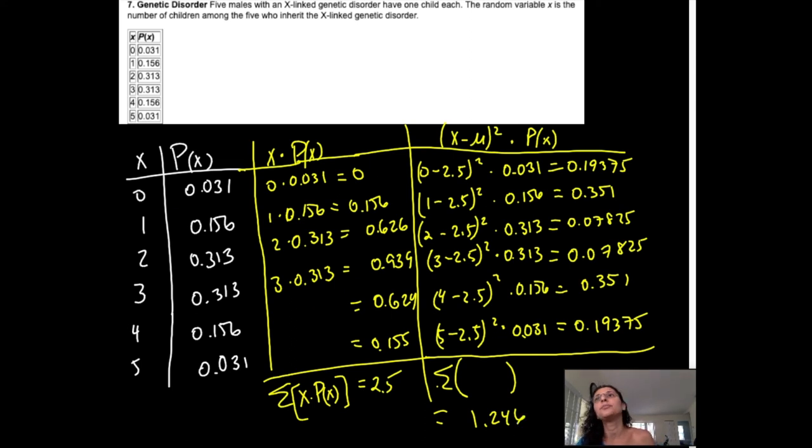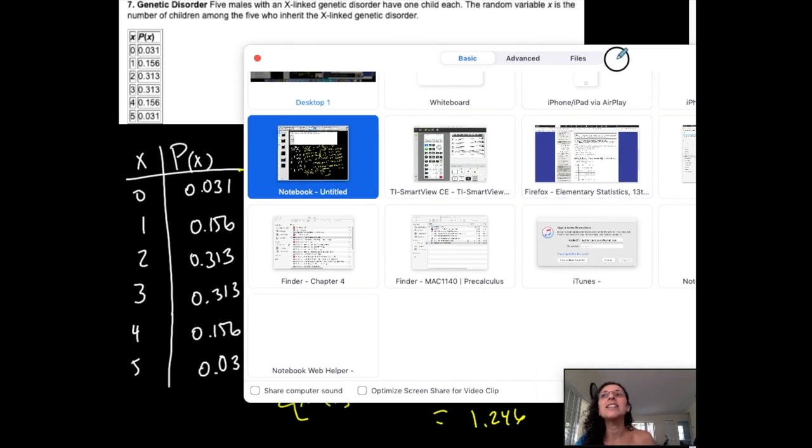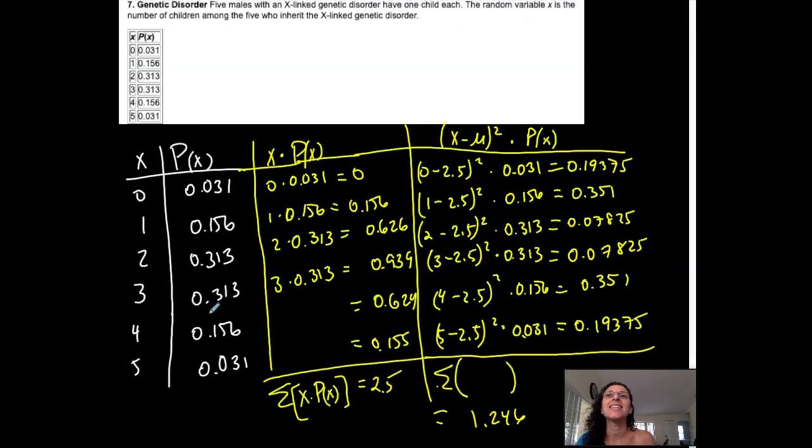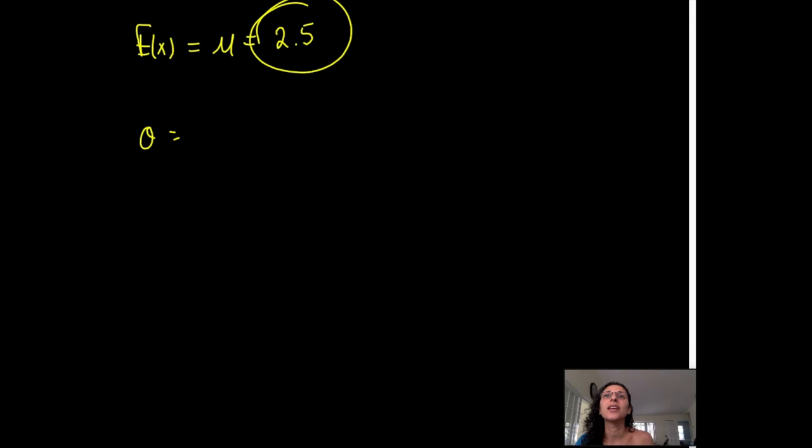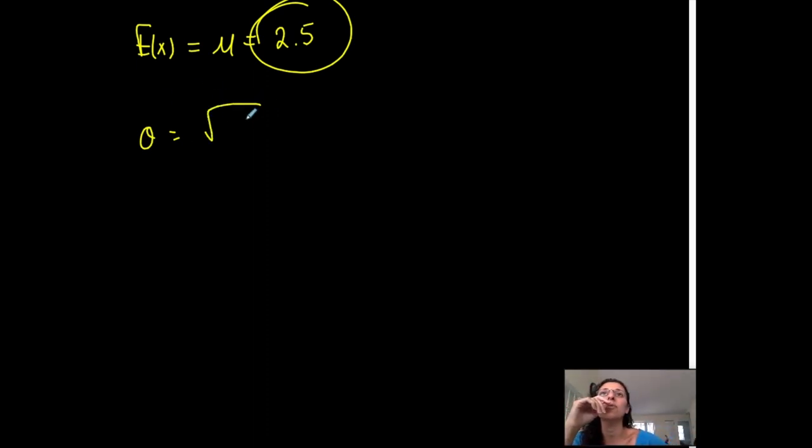Now I'm not done. Why am I not done? The last thing that this tells me to do is then, what's the symbol? Square root. So finally, my standard deviation is the square root of 1.246. Finally, I'm there.